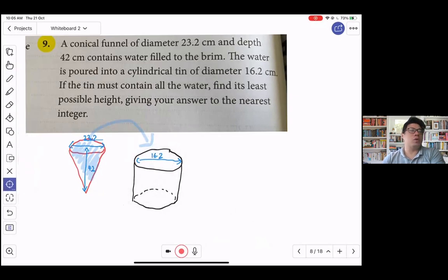I do not know the height of this tin here, but what I know is I'm pouring the volume of the cone, the water inside, into this tin. So if the tin has to contain all the water, I want to find out the least possible height, giving my answer correct to the nearest integer. First of all, the thing we need to do is to find out how much volume of water we are pouring in.